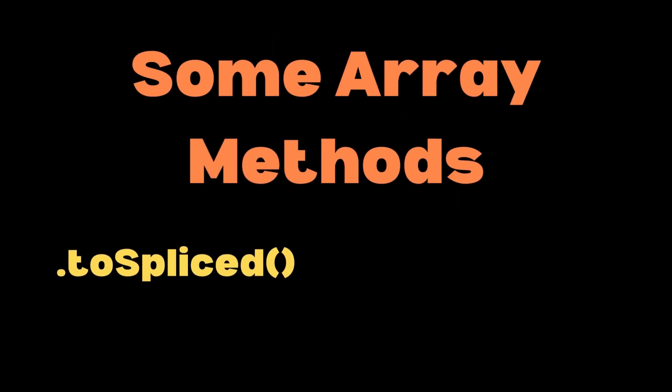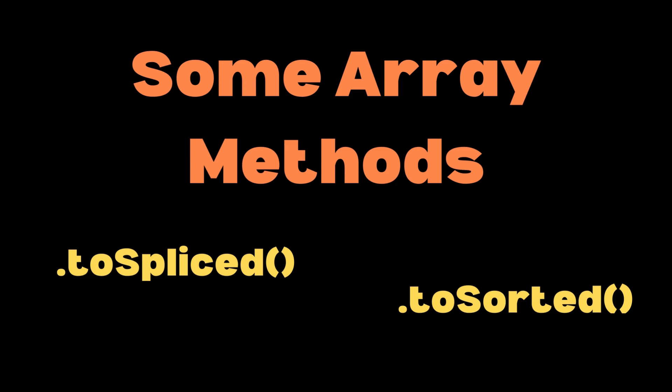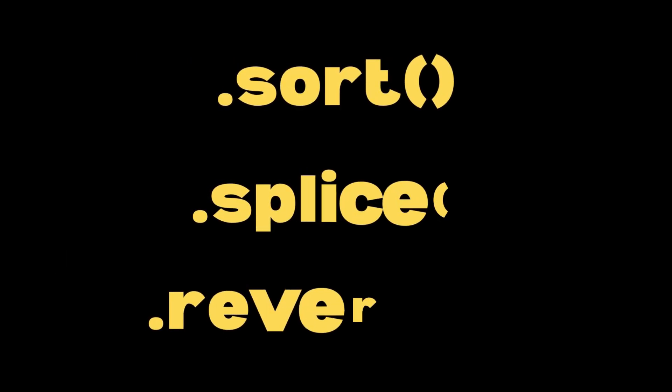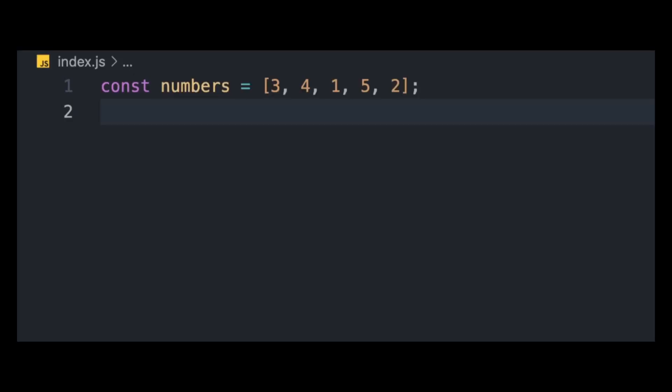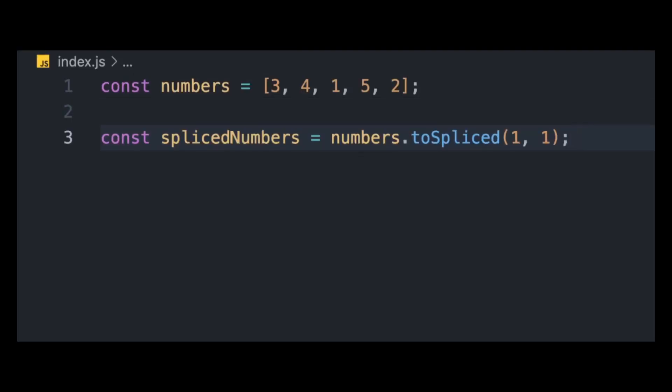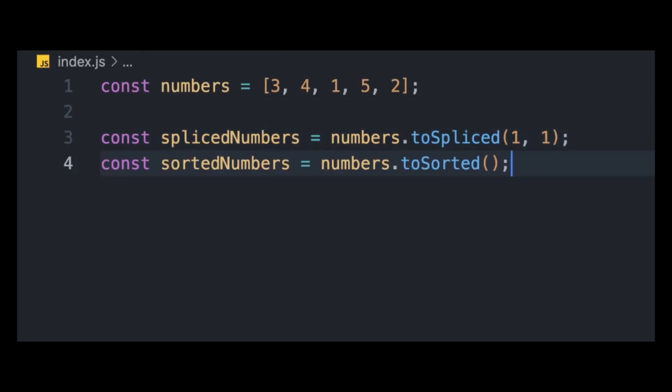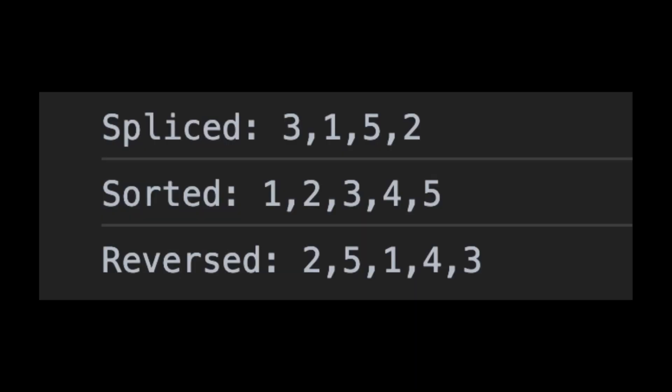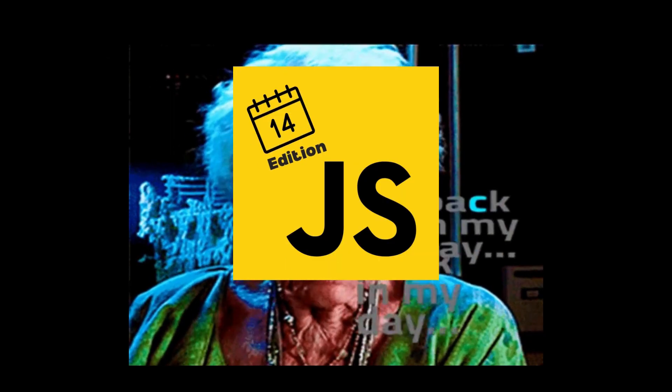Now let's talk about some array methods like toSpliced, toSorted, and toReversed. When we use methods like sort, splice, and reverse, they mutate the original array. But when we use toSpliced, toSorted, and toReversed, we can splice, sort, and reverse an array without mutating the original array.